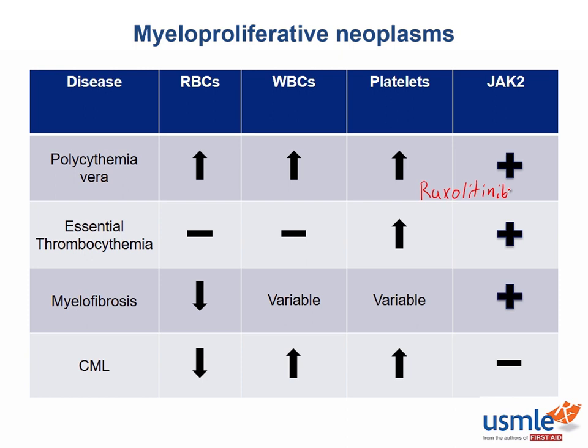As mentioned earlier, the JAK2 mutation is common in the chronic myeloproliferative disorders. It's important to know that the JAK2 signal transduction pathway actually controls hematopoietic growth factor signaling, so it makes sense that messing with this pathway will alter the number of blood cell groups. JAK2 mutations are always present in polycythemia vera, and this is due to a somatic mutation, meaning that it is not inherited. For essential thrombocythemia and myelofibrosis, you see a JAK2 mutation about 30 to 50% of the time.